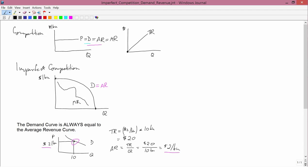What would total revenue look like? Let me draw this demand curve again. Again, we're just talking about imperfect competition now. So this is average revenue. What about total revenue?